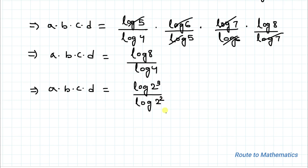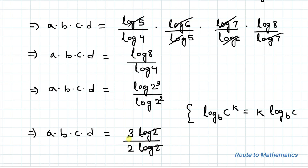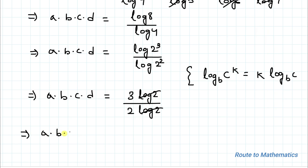This can be written as log 2 to the power 3 divided by log 2 to the power 2. We apply the logarithm power rule: log of c to the power k equals k times log c. So a times b times c times d equals 3 log 2 divided by 2 log 2. The log 2 terms cancel, giving us a times b times c times d equals 3 over 2 as our answer.